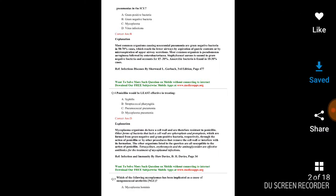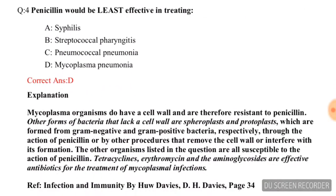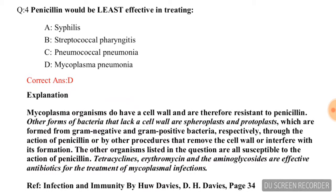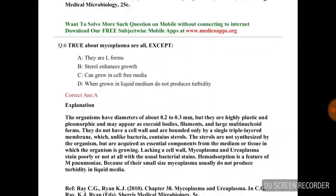Next question: penicillin would be least effective in treating — staphylococcal pharyngitis, pneumococcal pneumonia, or mycoplasma pneumonia? The correct answer is mycoplasma pneumonia, option D.